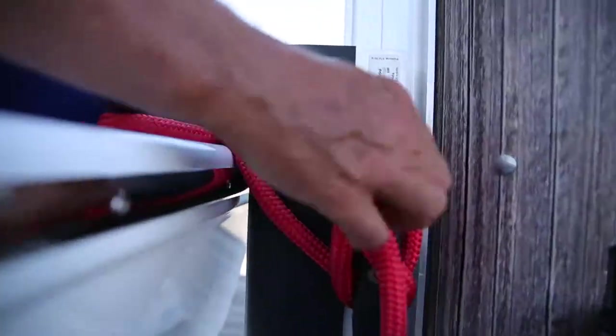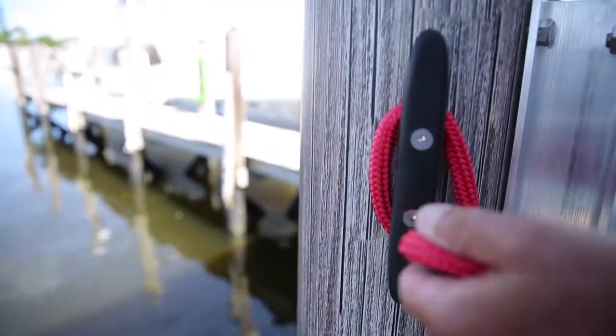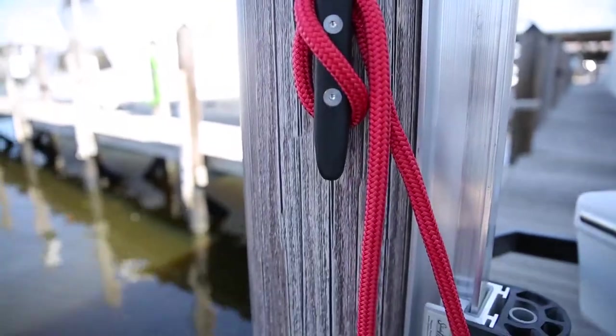To release the line when leaving the dock, simply untie the end attached to the SlideMore cleat first. Then tie the line off on the parking cleat until you return to the dock.